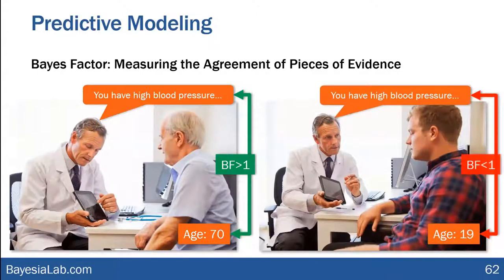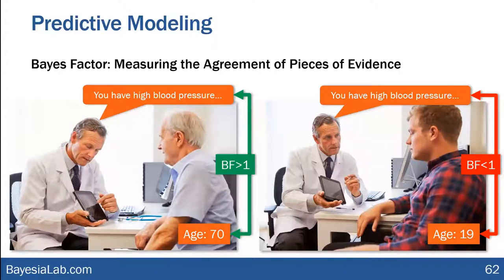The Bayes factor would say these two pieces of evidence are conflicting. This is very important in the clinical process. You can also imagine criminal trials where you have quite often pieces of evidence that don't agree — prosecutors and defense attorneys presenting opposite sides — and the Bayes factor, on the basis of a model, can calculate the amount of agreement or disagreement. But that's perhaps a topic for another webinar.